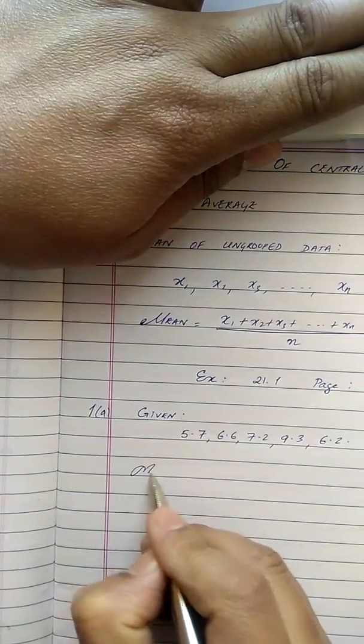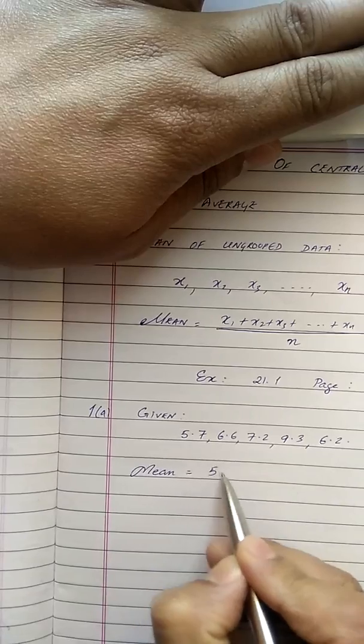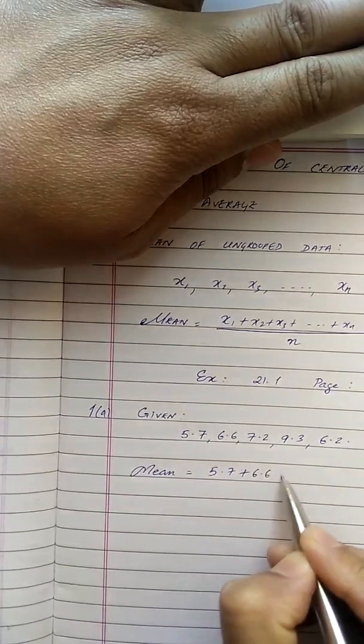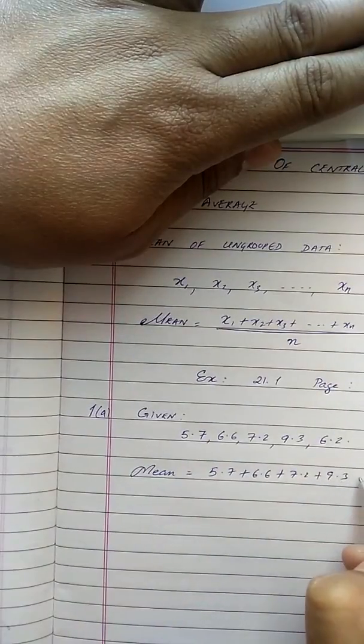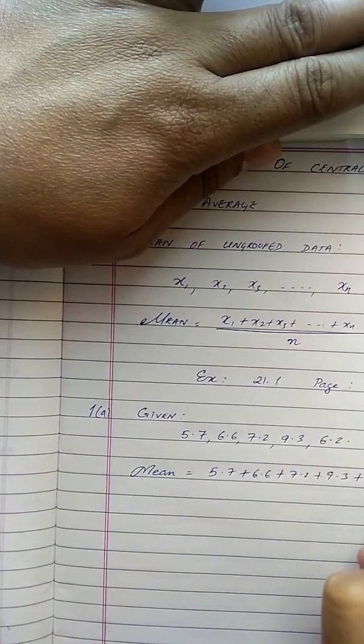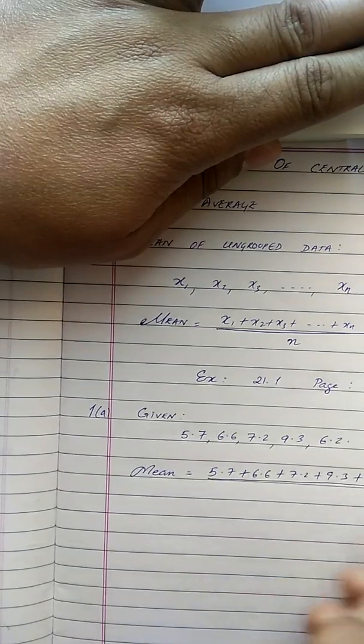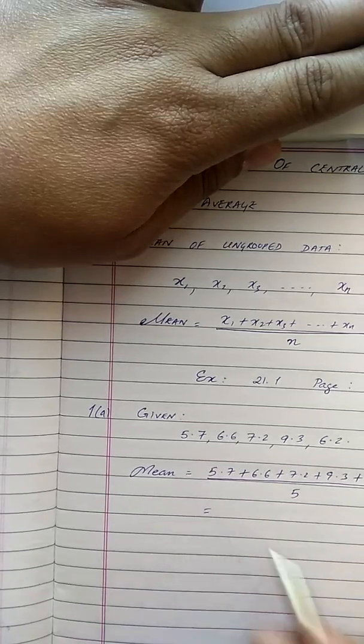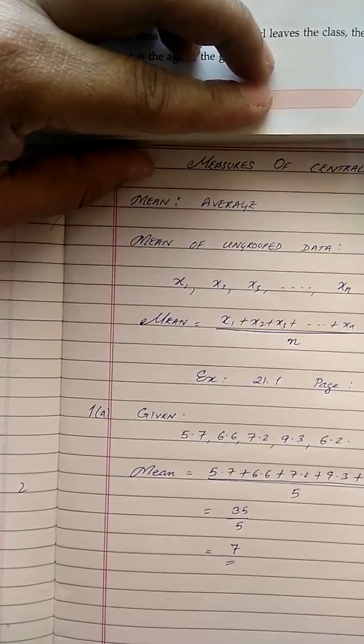We need to find out the mean or average of these data. In order to find this, we are going to add 5.7 with 6.6, 7.2, 9.3 and 6.2, and divide it by the total number of variants. The number of variants are 1, 2, 3, 4, 5. So the mean of these variants is 7.